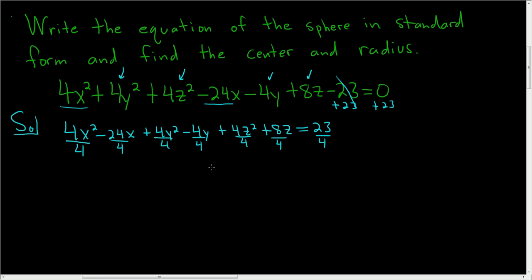So on the left-hand side, we end up with x squared minus 6x, because 24 divided by 4 is 6. Plus these cancel, so y squared. 4 over 4 is 1, so we get minus y.